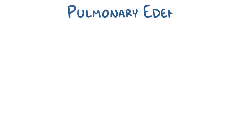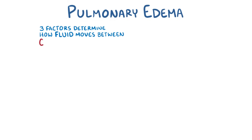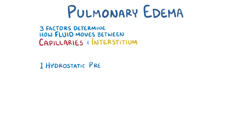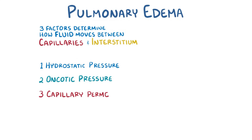To understand pulmonary edema, let's first talk about the three main factors that determine how fluid moves between the capillaries and interstitial fluid, which are the hydrostatic pressure, oncotic pressure, and capillary permeability.